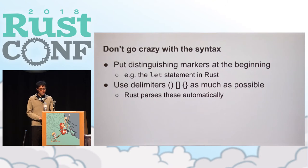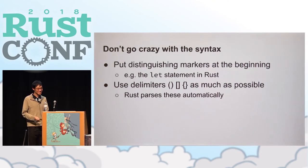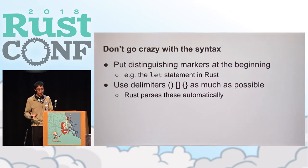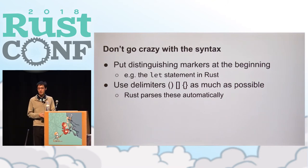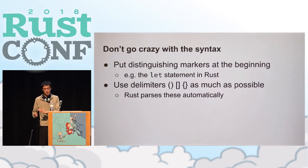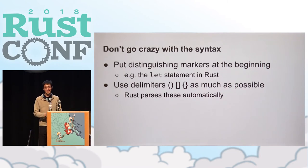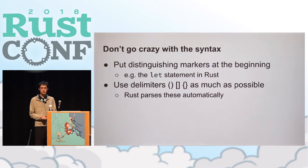One example is the let statement in Rust: it starts with the keyword 'let'. From a parsing point of view, once you see the 'let' keyword, you know that the rest of that statement is going to be a let statement — there's no way you can go halfway along and suddenly realize it's actually a while loop instead. That means a parser can avoid backtracking, which means having to go back and parse everything again.